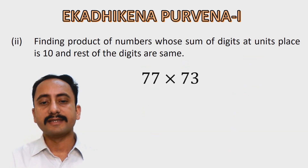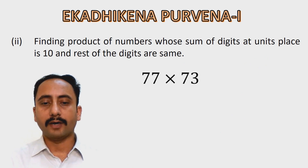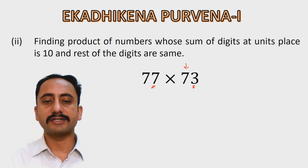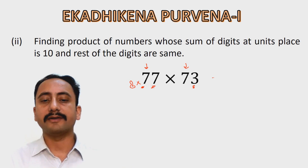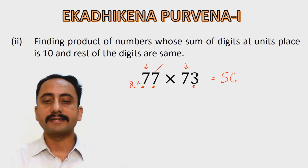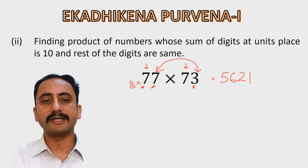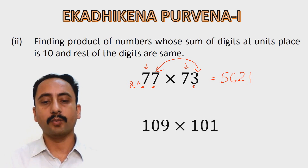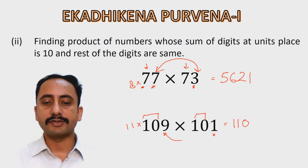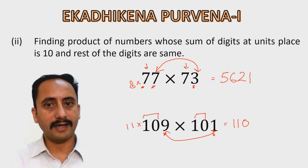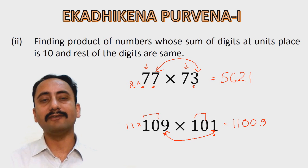Next: 77 multiplied by 73. The sum of digits at units place is 10 and the rest are the same, so we apply Ekadhikam Purvenam. One more than 7 is 8, and 7 multiplied by 8 is 56. Then 7 multiplied by 3 is 21. So the product is 5,621. Next: 109 multiplied by 101. One more than 10 is 11, and 10 into 11 is 110. Then 9 multiplied by 1 is 9, written as 09. So the answer is 11,009.